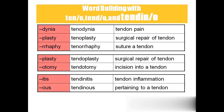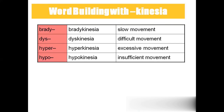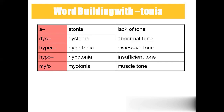Tenodynia means tendon pain. Tenoplasty is surgical repair of the tendon. Tenorrhaphy is suturing a tendon. Tendoplasty is also surgical repair of the tendon. Tendotomy is incision into the tendon. Tendinitis is tendon inflammation. Tendinous means pertaining to the tendon. Bradykinesia means slow movement. Dyskinesia means difficult movement. Hyperkinesia means excessive movement. Hypokinesia means insufficient or decreased movement. Atonia means lack of tone. Dystonia means abnormal tone. Hypertonia means excessive tone. Hypotonia means decreased or insufficient tone. Myotonia means muscle tone.